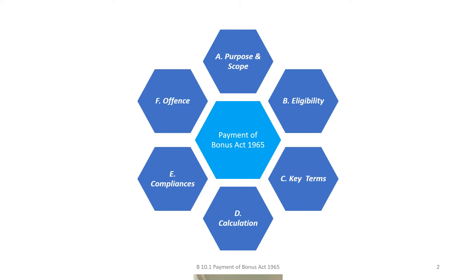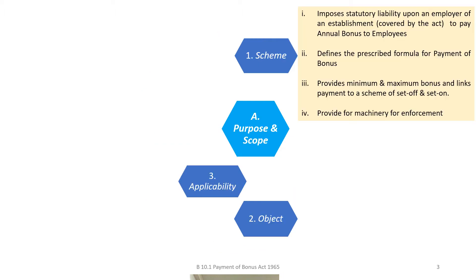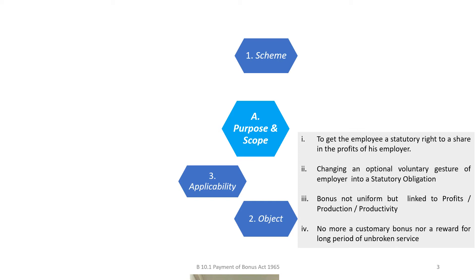The Act prescribes the scheme of bonus with a formula and clearly defines its components. It also provides for a mechanism of monitoring and redressal of grievance. The scheme provides for annual bonus with a minimum and maximum ceiling and an enforcement mechanism in place. The Act aims at creating a statutory obligation to pay bonus and links it to profits, production and productivity.